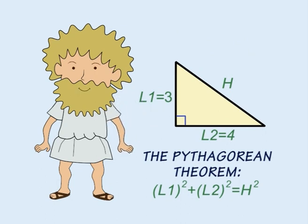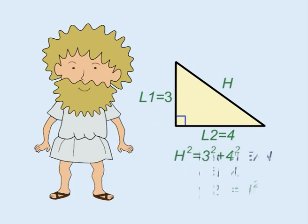In this example, one leg is three units long, and the other leg is four units long. So the hypotenuse equals the square root of three squared plus four squared, or the square root of twenty-five, which is five.